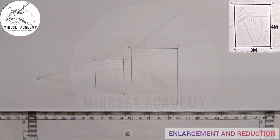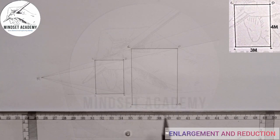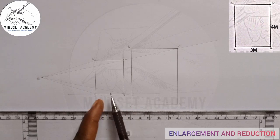What I have successfully done here is I have enlarged. Enlarging means you're making this one bigger, you're increasing the length and the width. And if I want to reduce, that means I need something that is smaller than this.